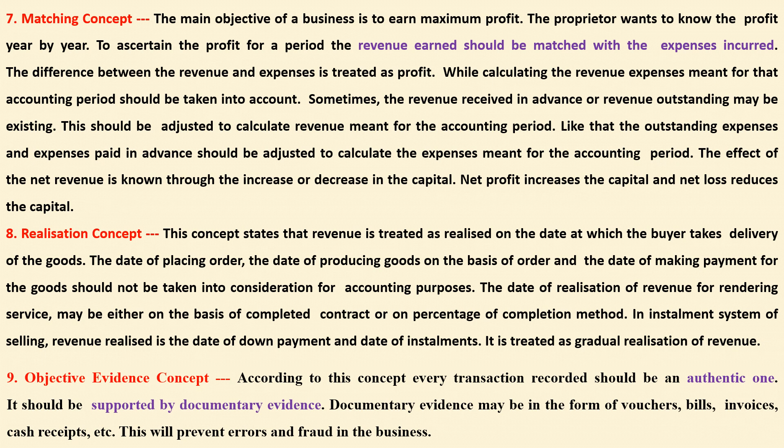The eighth one is realization concept. According to this concept, revenue is treated as realized on the date at which the buyer takes delivery of the goods. The date of placing order, the date of producing goods on the basis of order, and the date of making payment for goods should not be taken into consideration for accounting purposes. For service revenue, it may be recognized either on the basis of the completed contract method or the percentage of completion method. In installment selling, revenue realized includes the date of down payment and the dates of installments — treated as gradual realization of revenue.